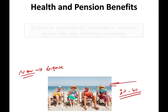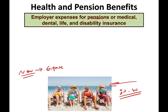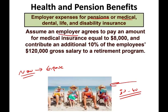Therefore, we have to record the expense now. Employer expenses for pension or medical, dental, life, and disability insurance are examples of that estimated liability. Assume an employer agrees to pay $8,000 for medical insurance and contribute an additional 10% of $120,000 gross salaries to a retirement program. We're going to contribute 10% of their salary, which is $12,000, and we think we're going to incur $8,000 in medical insurance. This $8,000 may not be accurate because we don't know exactly how much it will cost, but we estimate $8,000 — that's why they are called estimated liabilities.